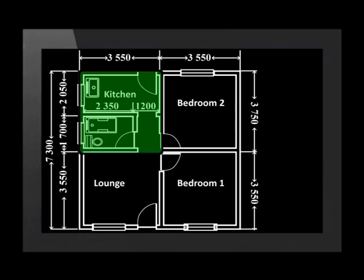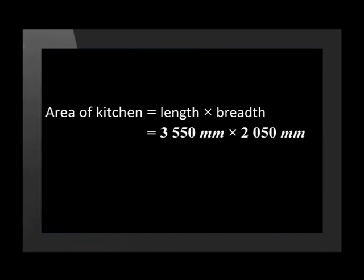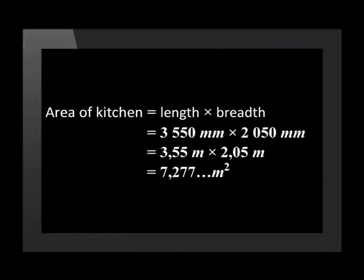We need to calculate the surface area that both floors will cover. Let's start with the tiles — the surface area of the bathroom, kitchen and the passageway. The measurements on the floor plan are given in millimetres but we want our answer in metres squared, so we need to divide all our measurements by 1000 before we multiply them together. The length of the kitchen is 3550 mm and the breadth is 2050 mm. This becomes 3,55 times 2,05, which equals 7,277 metres squared.